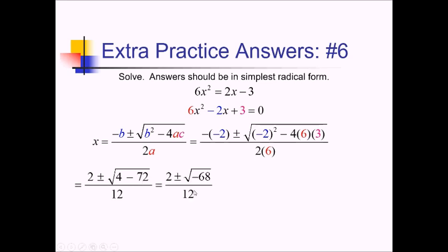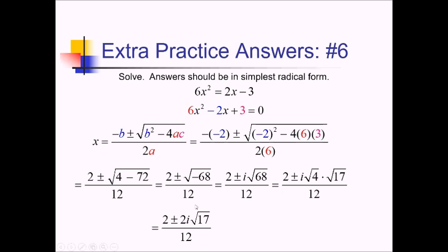I know I can take an i out of the radical since there's a negative inside. And 68 is divisible by 4 — that's 4 times 17 — so I can split up that radical into a perfect square times something else. Square root of 4 is 2, so I can write this as 2 plus or minus 2i radical 17, all over 12. And now since my constant, the coefficient of my radical, and the denominator all have a common factor of 2, I can divide all three by 2. So this can be rewritten as 1 plus or minus i radical 17, all over 6.